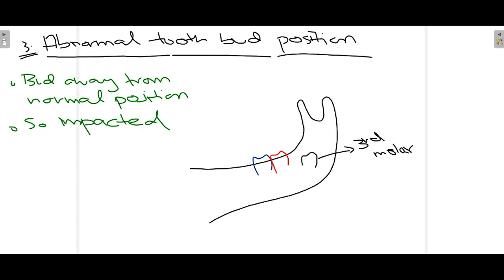The third cause is abnormal tooth bud position. The tooth develops within a bud, and normally these buds are in their respective positions. However, sometimes the bud is not in its normal position, causing the tooth to erupt in an abnormal location or not erupt at all. As shown in the diagram, while the first and second molars are in normal position, the third molar bud is displaced — leaving no proper space or direction for eruption, leading to impaction.